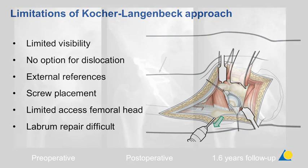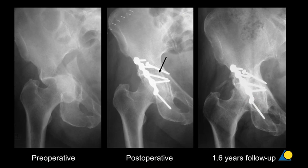This case was treated by a Kocher-Langenbeck approach — a severely medially displaced T-shaped fracture. Reduction was not perfect, as also seen at the lower pubic ramus. After only 1.6 years of follow-up, you can already see narrowing of the joint space and osteoarthritis.